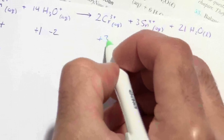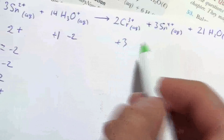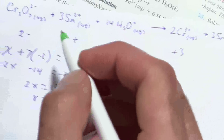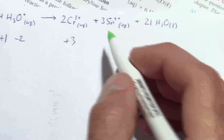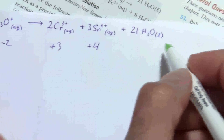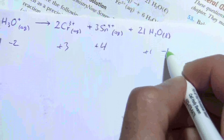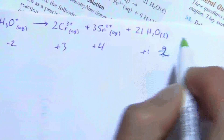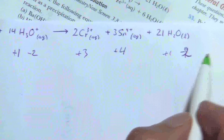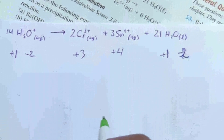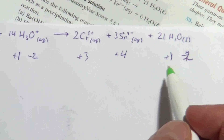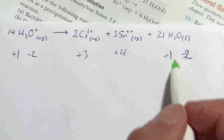Moving along: on the products side, chromium is plus three. Tin is positive four, and water again has positive one for hydrogen and negative two for oxygen. Oxygen is always negative two, except in certain rare circumstances like peroxides and superoxides — but in the vast majority of compounds, always negative two. Likewise for hydrogen there are some exceptions, hydrides and rare compounds, but we don't deal with those much in general chemistry, so it's always plus one for our purposes.